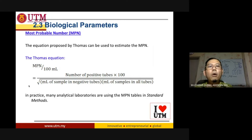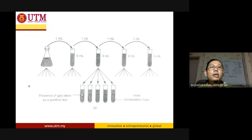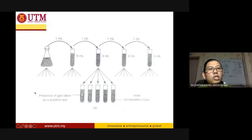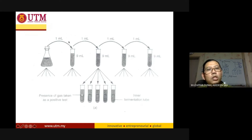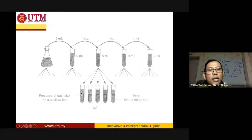It will be easier to understand through examples. This diagram shows the experiment: a sample is put into test tubes to observe positive and negative results. The sample is also diluted and divided into five test tubes. The tubes with bubbles are the positive test tubes.